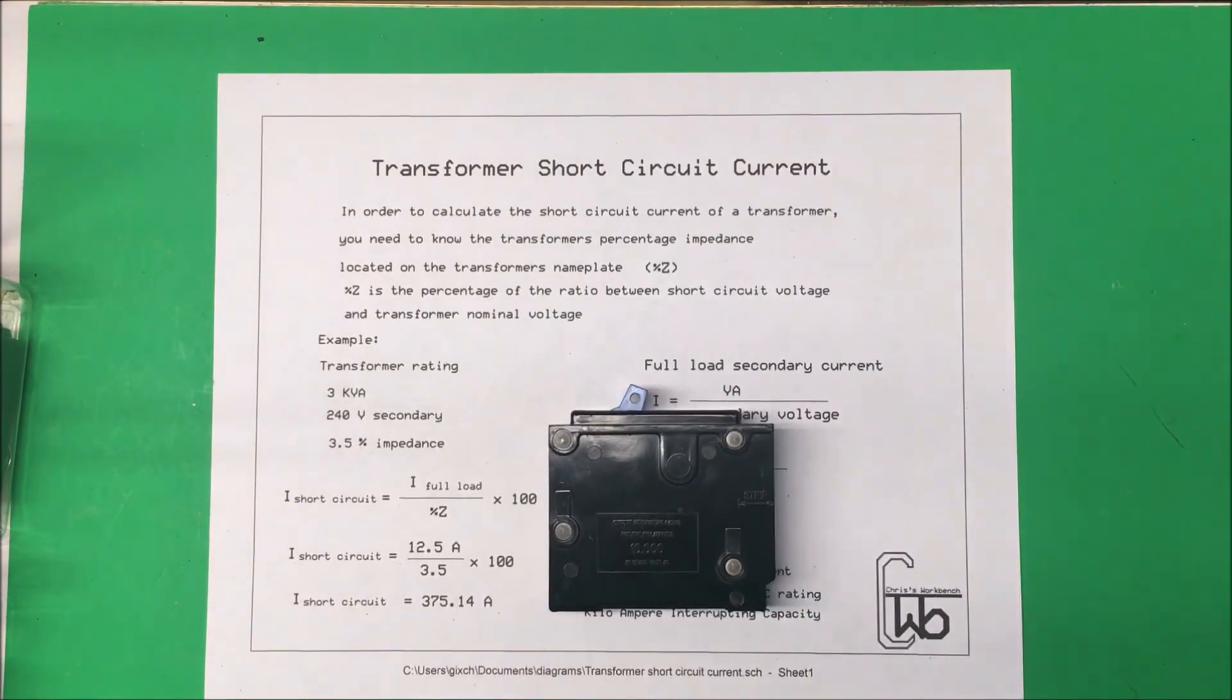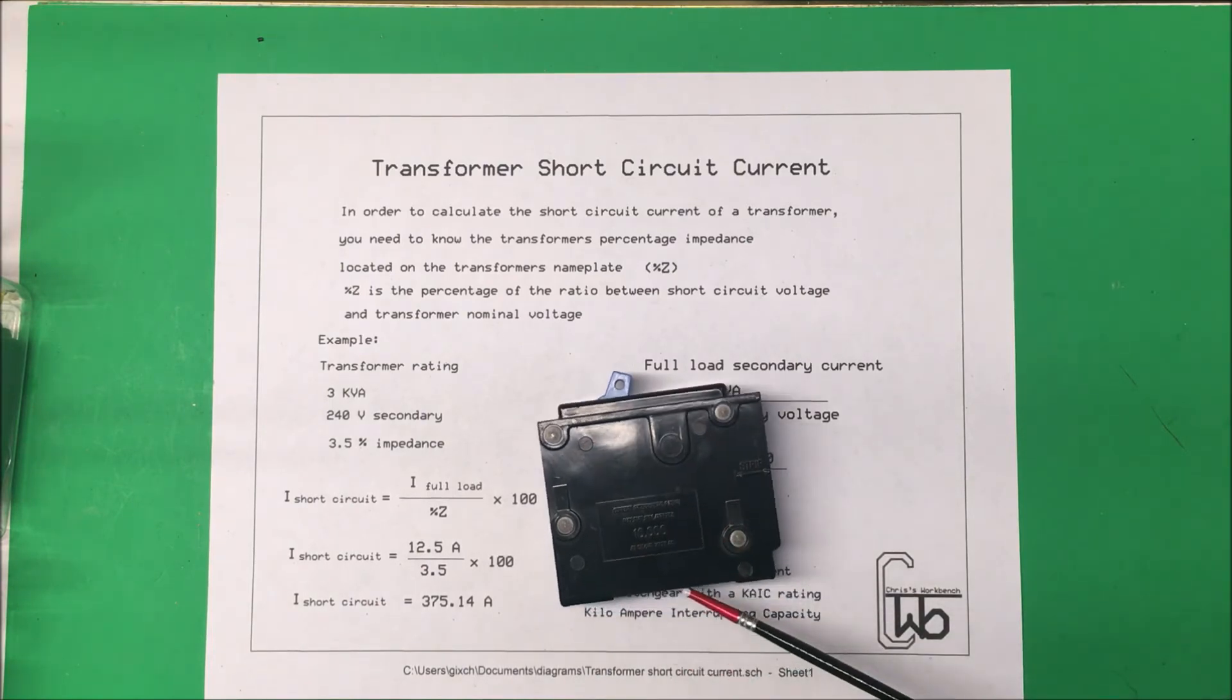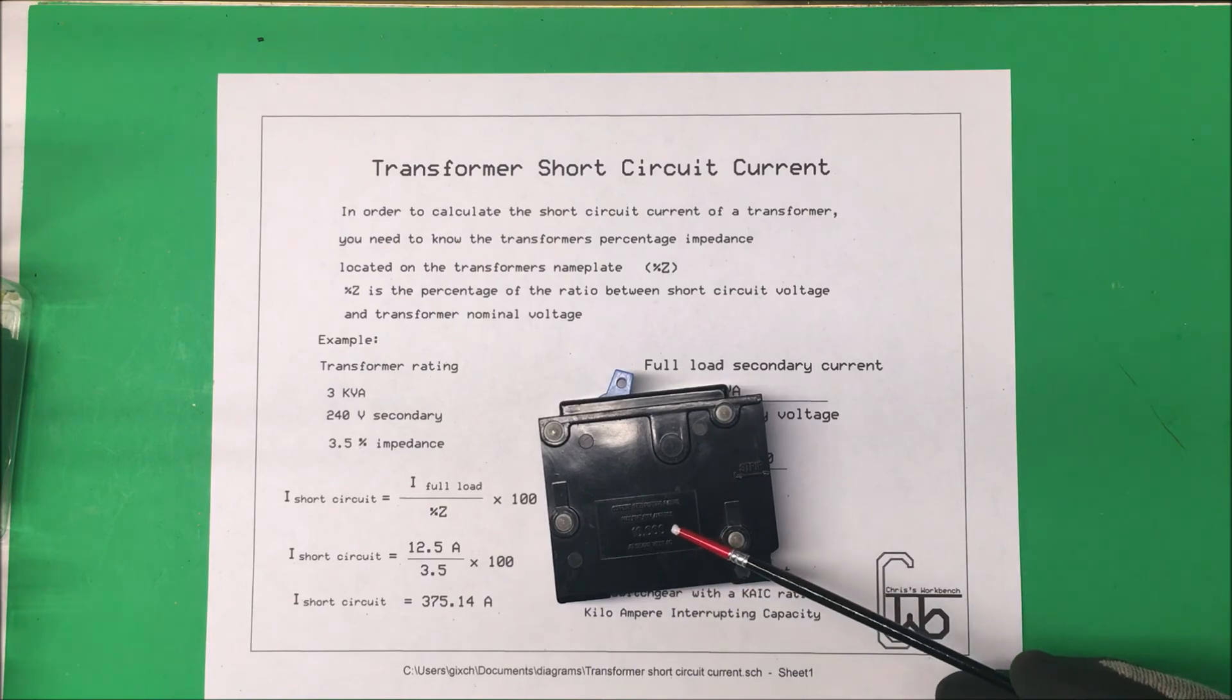Now most circuit breakers and fuses are rated well over that. I don't know if you can see this one, but this one has a KAIC rating of 10,000 amps, so well within the limit.